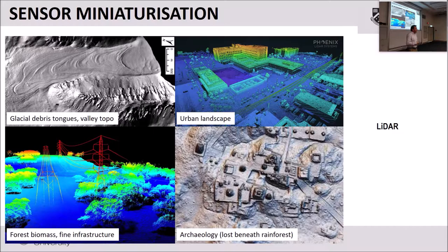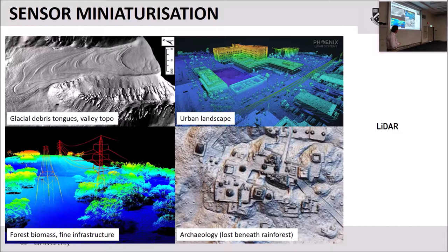This slide shows the data that can emerge from LiDAR. We've now got LiDAR at Monash University, just received in January-February and currently being commissioned. From it you can extract infrastructure information, landscape, and biomass. One image shows a glacial sheet flowing down a valley with individual debris tones and moraines. Another example is an archaeological site in South America covered by thick rainforest — the LiDAR can penetrate through vegetation and still return information about the landscape underneath to a reasonably high degree.